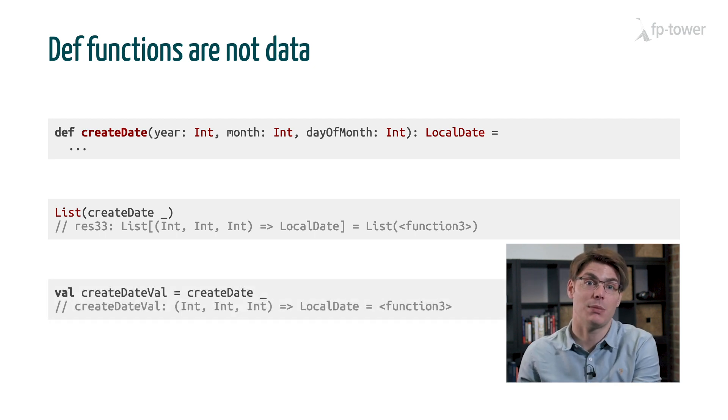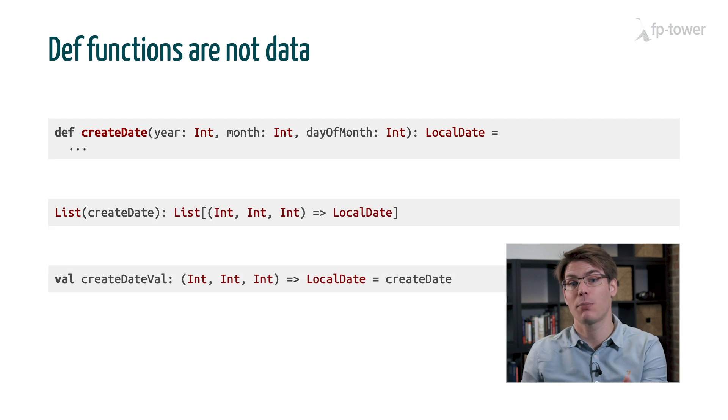Another way to demonstrate this eta expansion is when we try to assign a def function into a val. In this case, we would again need to add an underscore to make it work. One thing that makes this underscore quite annoying is the fact that in most cases, it's not required. Here we only needed it because the Scala compiler didn't know what to expect. It didn't know what we wanted to do. But we can help the compiler a little bit by adding a type annotation to this expression.